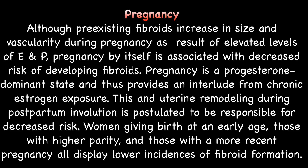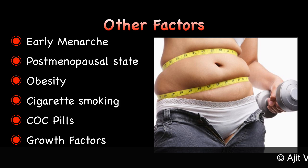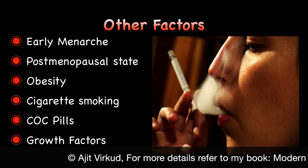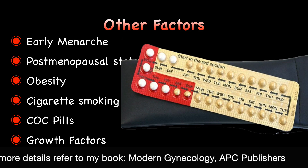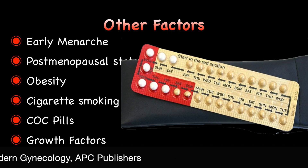Uterine remodeling during postpartum involution is postulated to be responsible for decreased risk. Women giving birth at an early age, those with high parity, and those with more recent pregnancy all display lower incidences of fibroid formation. Early menarche is associated with increased risk owing to greater estrogen exposure. Postmenopausal state is associated with decreased risk because of hypoestrogenism. Obesity is associated with increased risk because of greater adipose conversion of androgens to estrogens and decreased hepatic production of sex hormone-binding globulin. Cigarette smoking is associated with decreased risk because of lower physiologically active serum estrogen levels and altered estrogen metabolism. Prolonged use of combined oral contraceptive pills is associated with decreased risk because exposure to estrogen is opposed by progesterone, though some studies have shown no effect.